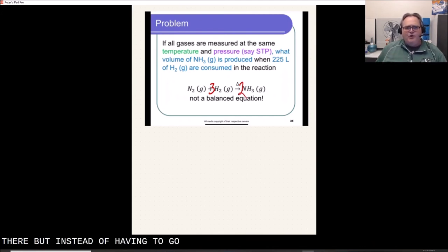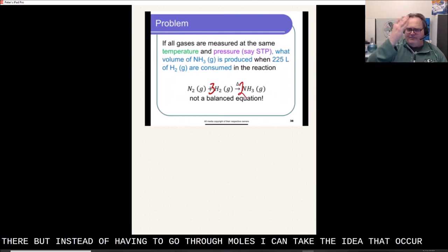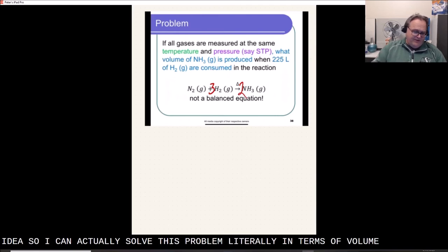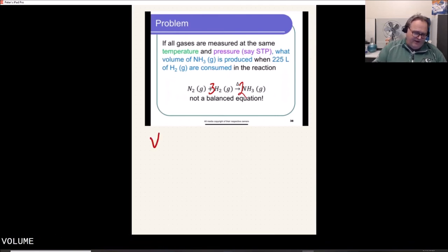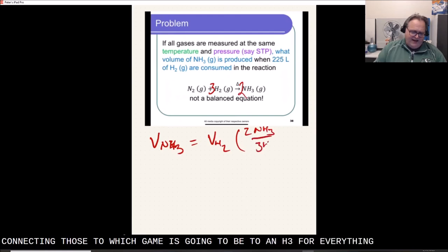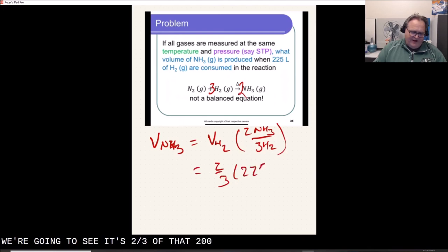But instead of having to go through moles, I can take the idea that, of course, if I've got 10 moles, I can use the stoichiometric ratio and still get the same idea. So I can actually solve this problem literally in terms of volume. So the volume of NH3 produced is going to equal the volume of H2 consumed multiplied by the stoichiometric ratio connecting those two, which again is going to be 2 NH3 for every 3 H2.